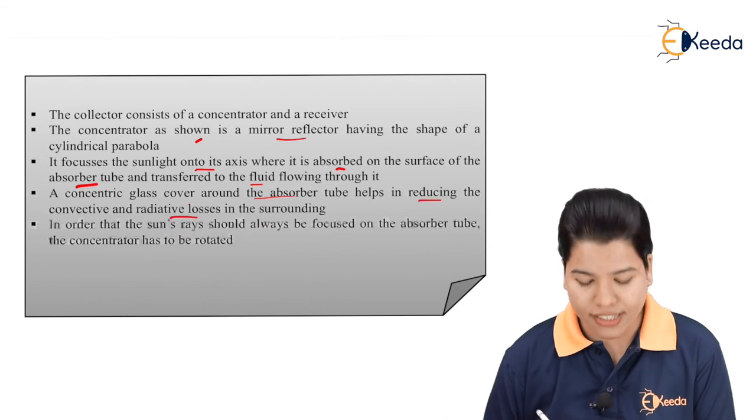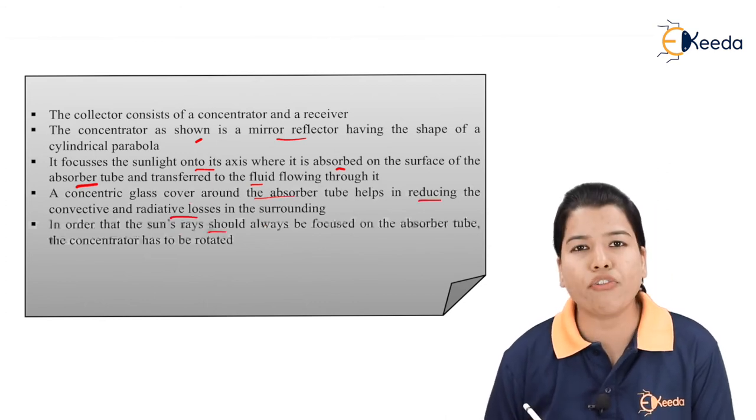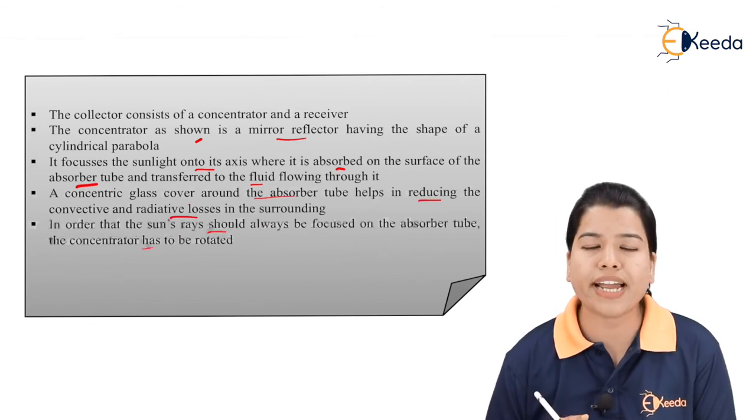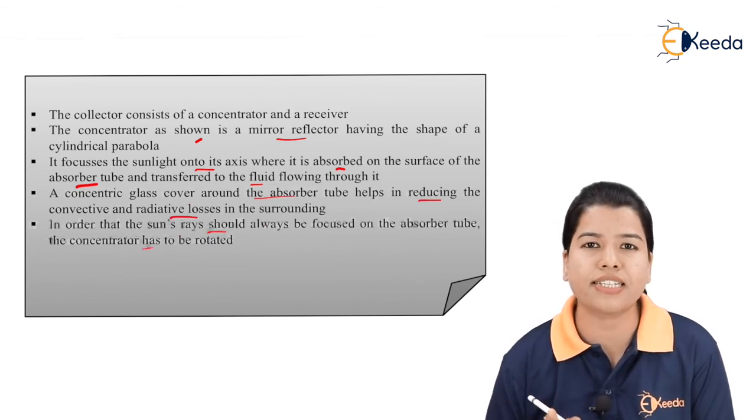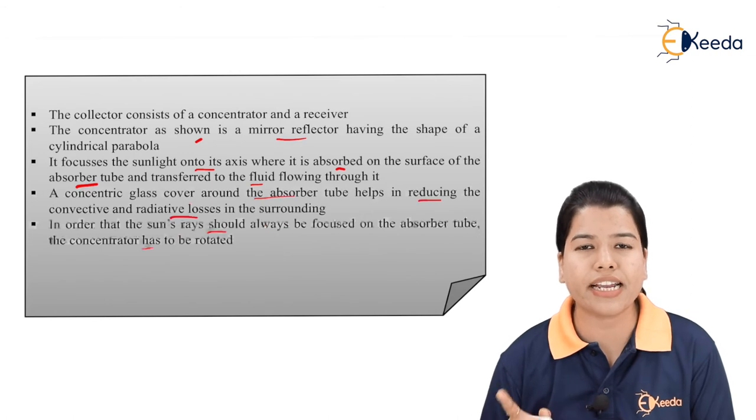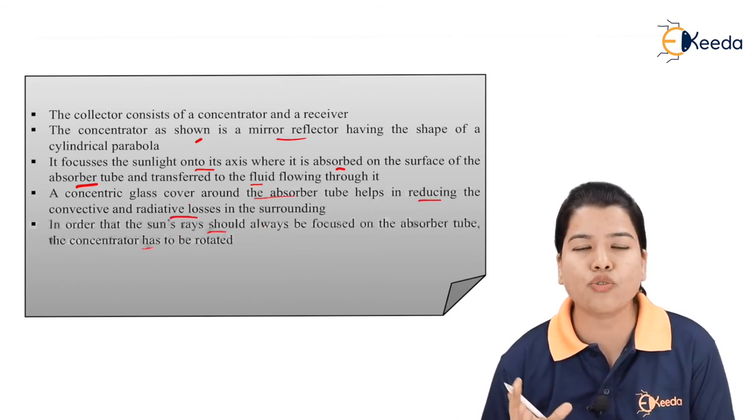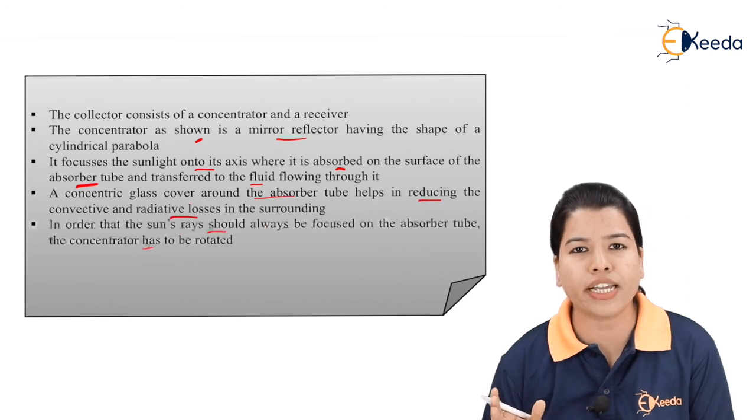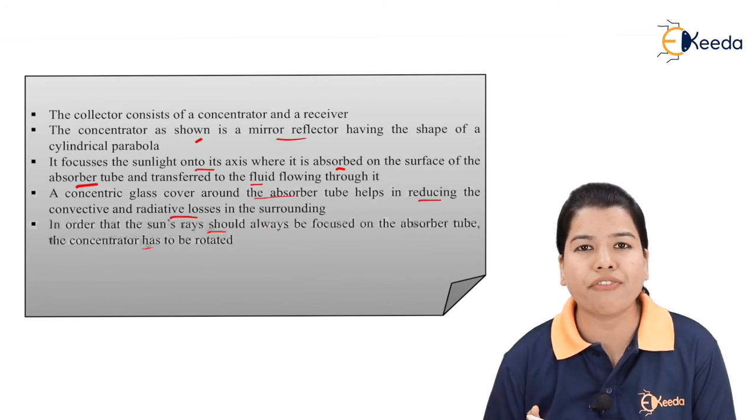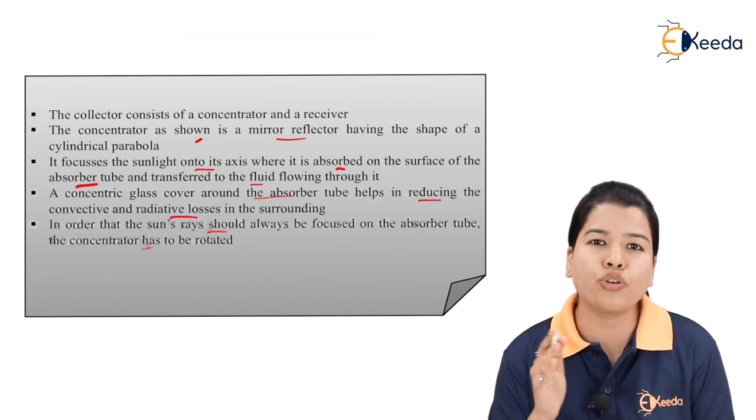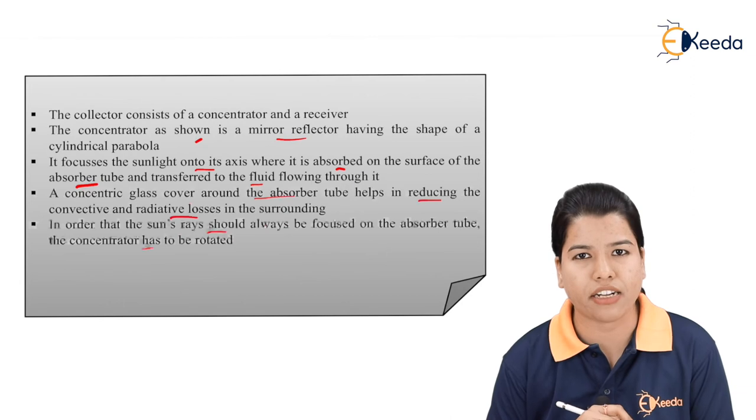In order that the sun's rays should always be focused on the absorber tube, the concentrator has to be rotated. We know that sun rises in the east and sets in the west. As a result, its intensity varies from east to west. At the morning time, solar rays are more concentrated on the eastern side. Then in the afternoon, they come in the center. At the evening time, they move towards the west and finally sun will set.